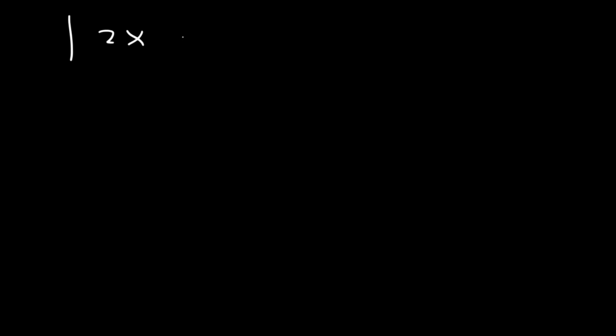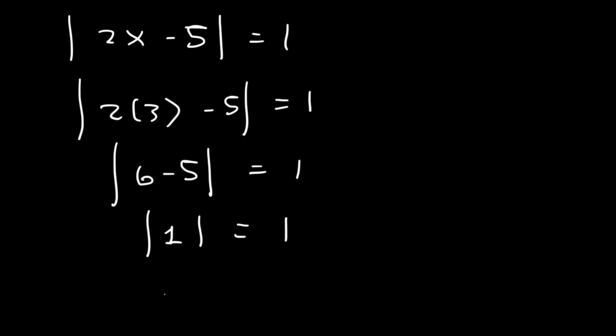Now if we plug in 3, it should also work. 2 times 3 is equal to 6. 6 minus 5 is 1. The absolute value of 1 is 1. So that works.